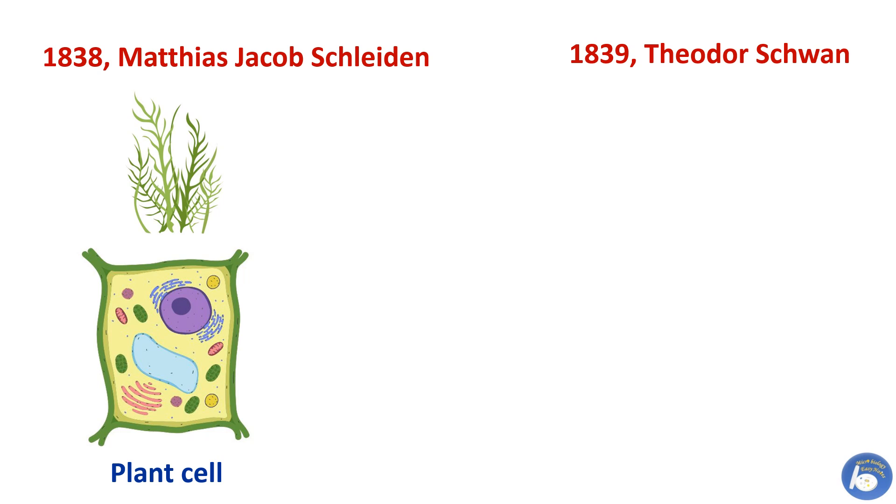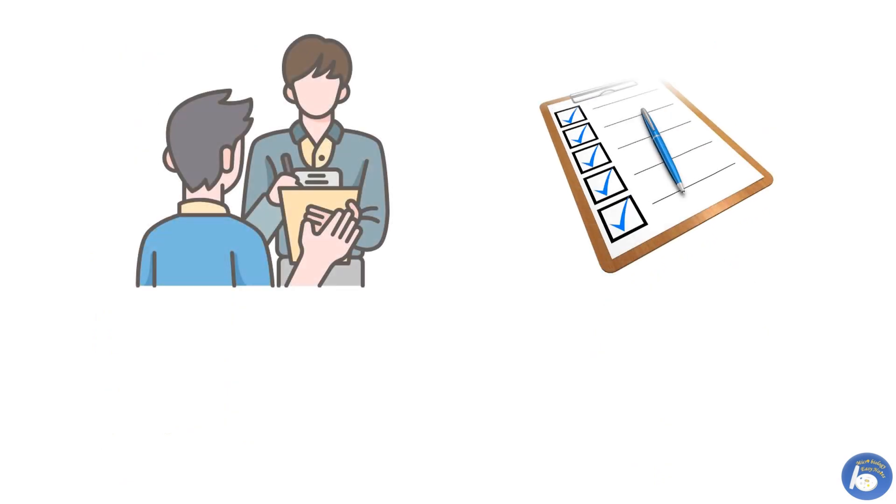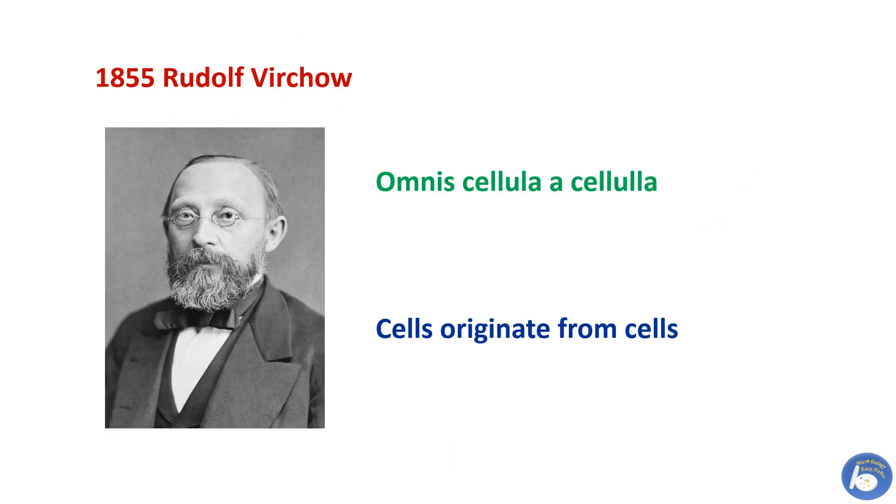His contemporary, Theodor Schwann, was also microscopically examining animal cells. Later, both compared their observations and results and found that cells are the basic structure of animal and plant bodies, but they could not explain how cells are formed.